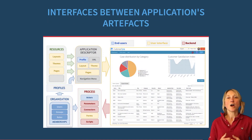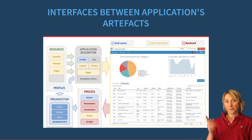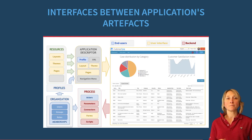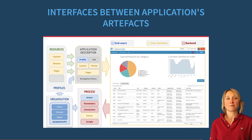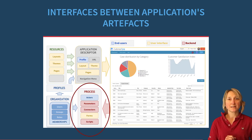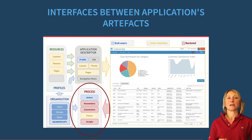A lot of elements are interacting with each other in an application based on processes. This schema summarizes the interaction between all the elements from the backend to the user interface. The backend is represented by processes together with parameters, scripts and connectors — the core behavior of the application.